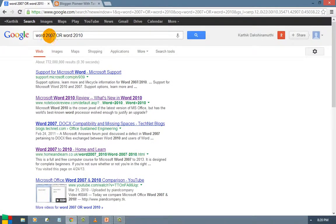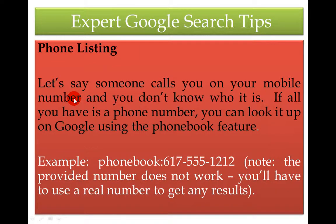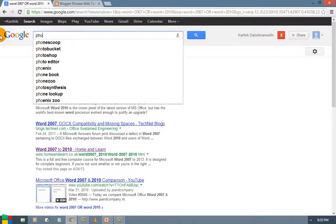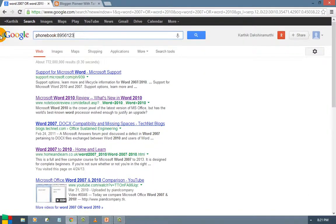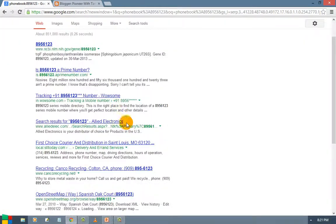Next is phone listing. Let us say someone calls you on your mobile number and you do not know who it is. If all you have is a phone number, you can look it up on Google using the phonebook feature. The syntax is phonebook: followed by the phone number. Search it and Google will display information about that number. This is how you can trace phone numbers if you receive an anonymous call.